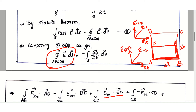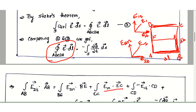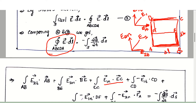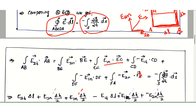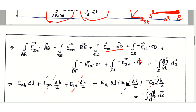The normal component E1n contributes E1n times distance EC. For segment CD, the tangential component E1t acts in the opposite direction, giving minus E1t times delta-l. For segment DF, the normal component gives minus E1n times distance DF, which is delta-h by 2. For segment FA, E2n acts in the opposite direction giving minus E2n times distance FA.